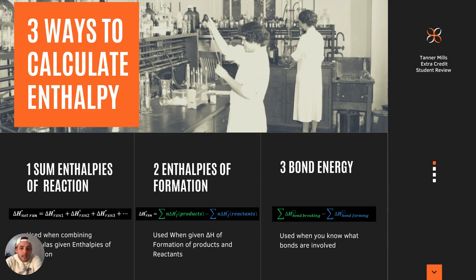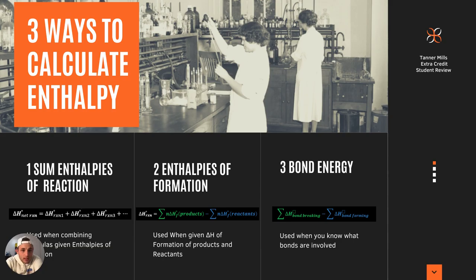The second way is you can calculate it using the enthalpies of formation. The enthalpy of formation is per one mole — you have some pure elements summated together to give you one mole, and from that you have an enthalpy of formation value. Hess figured out we can use these to calculate the total change in enthalpy of any given reaction if we have the individual enthalpies of formation of the products and reactants. You sum the moles times the delta H of formation of each product, and subtract that from the sum of moles times the delta H of formation of the reactants.